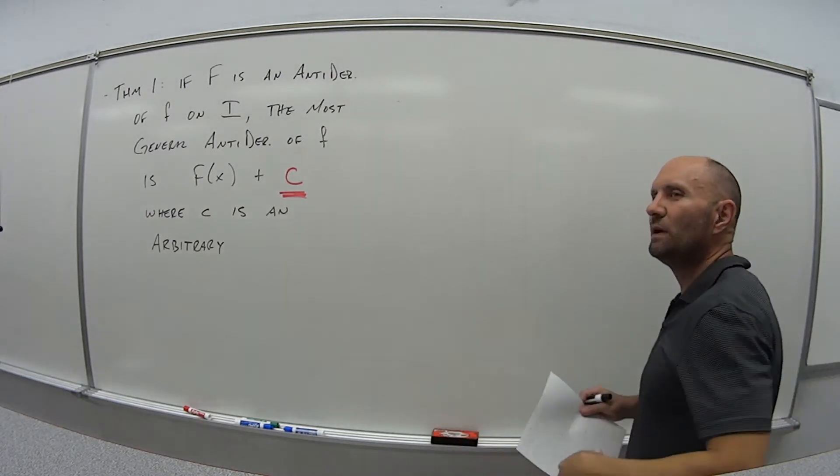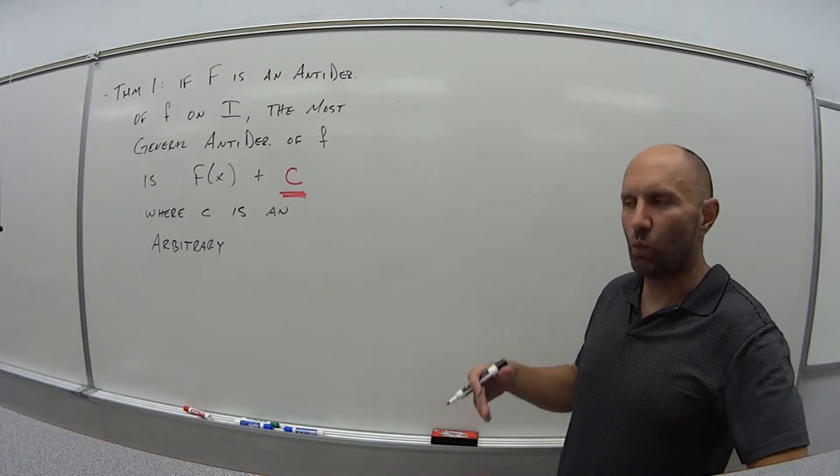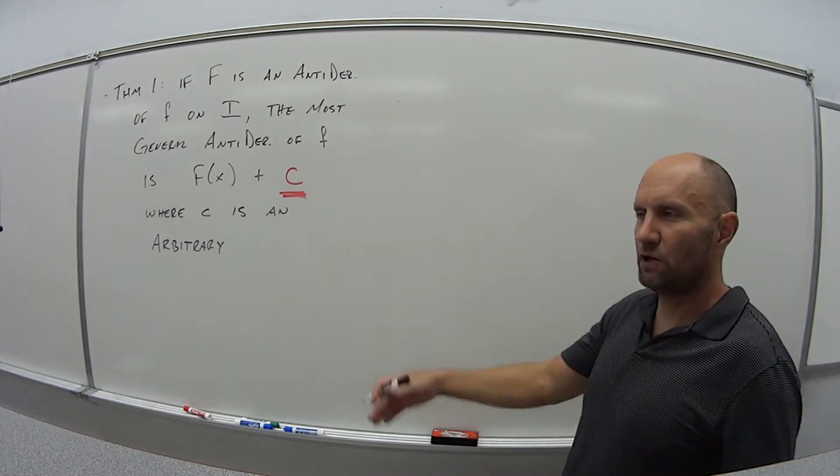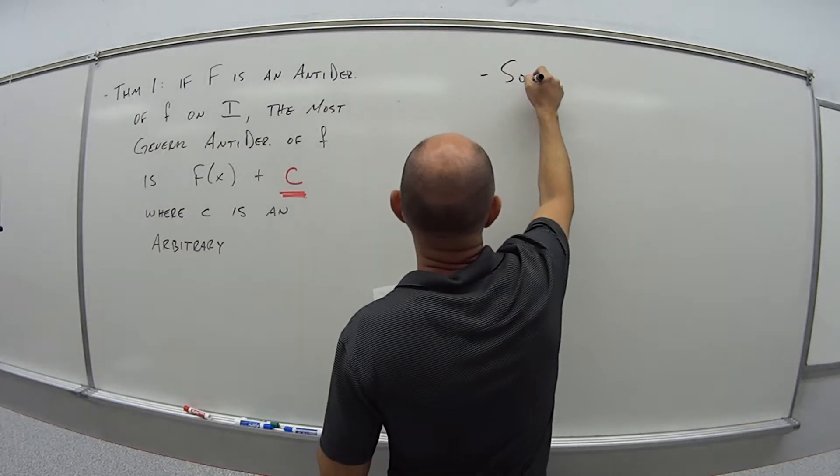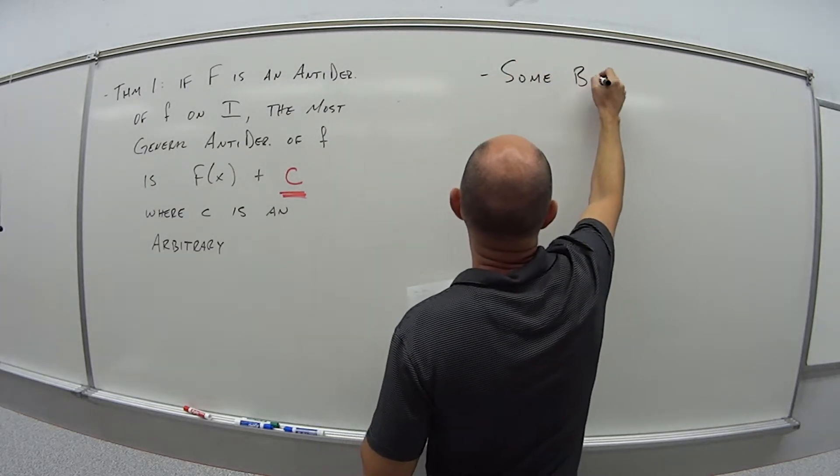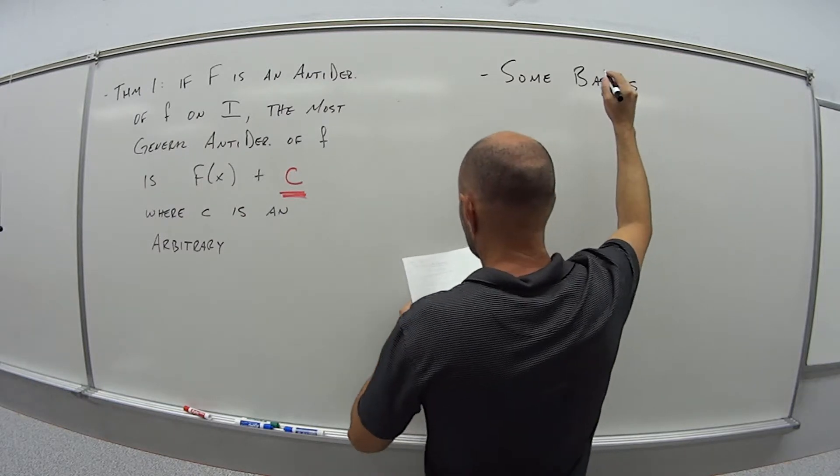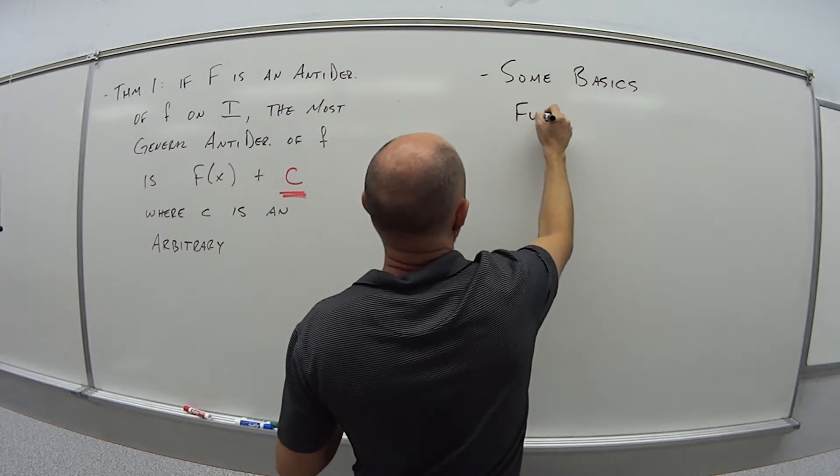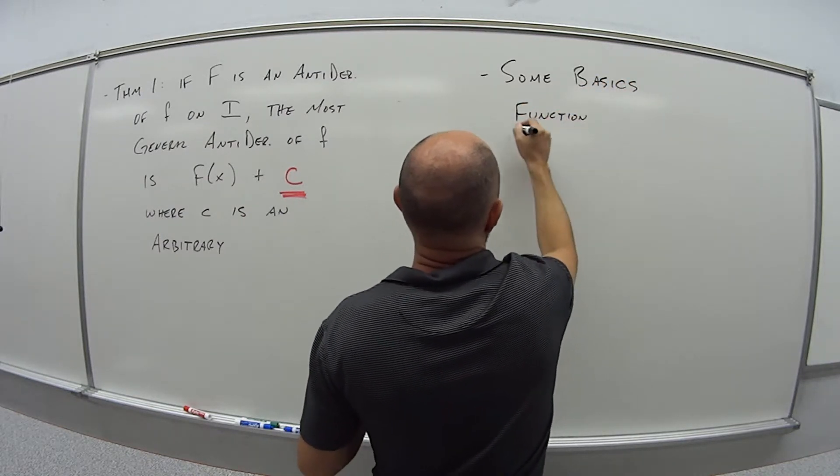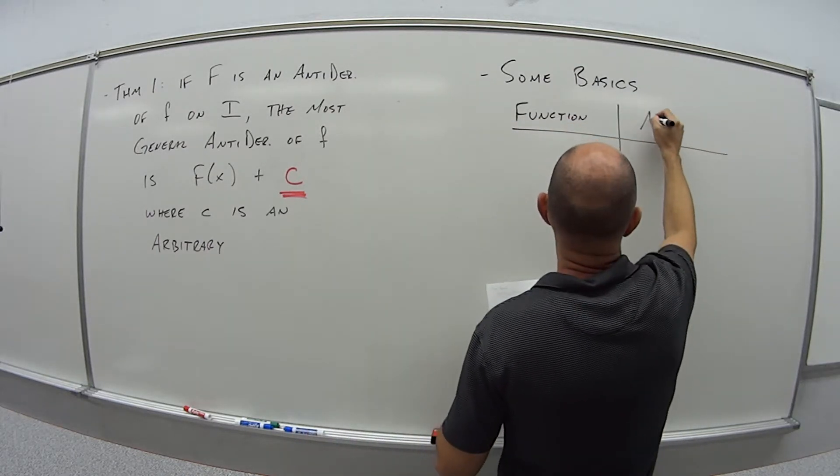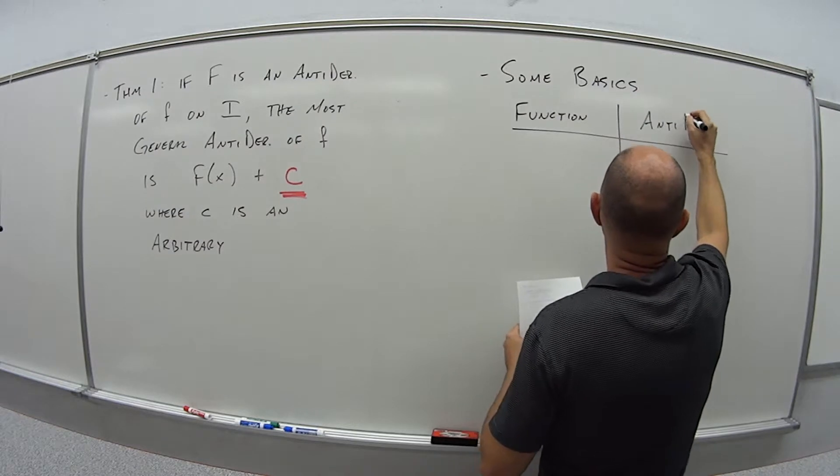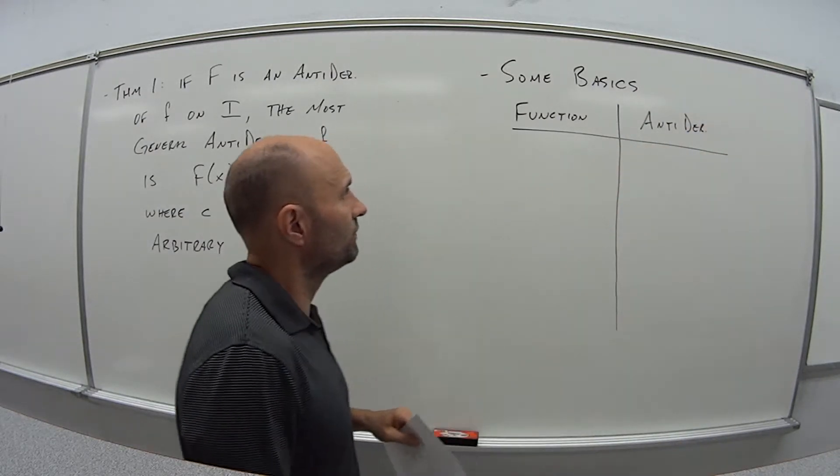So how do we find these anti-derivatives? What are the processes? Or do we have any shortcuts? And the answer is yes, a little bit. So some of the basics. I'm just going to build a little table here. So I have function and then its anti-derivative.